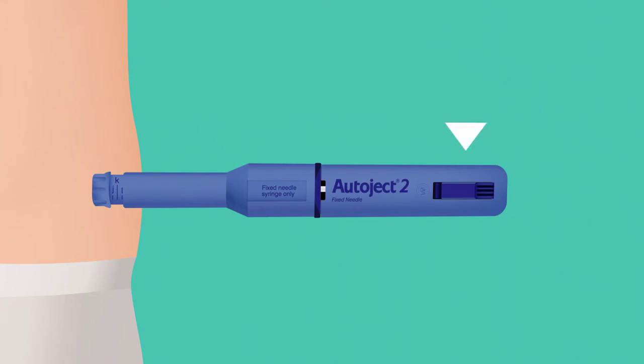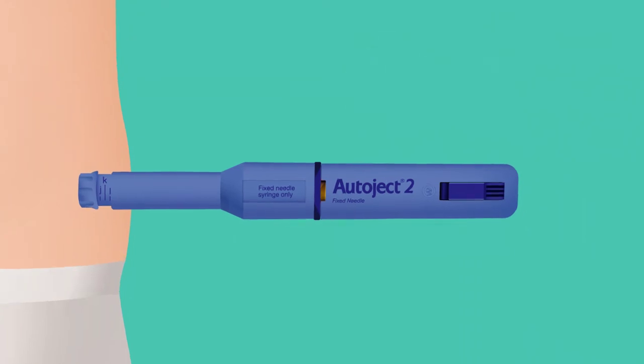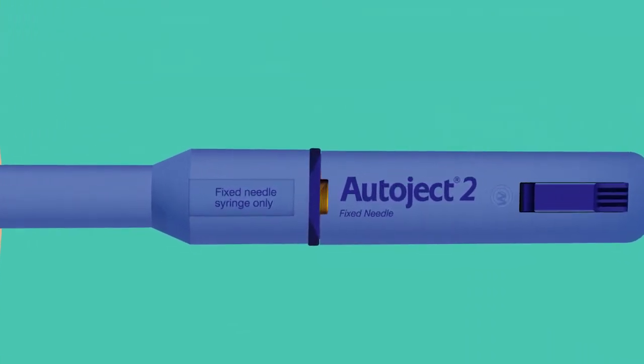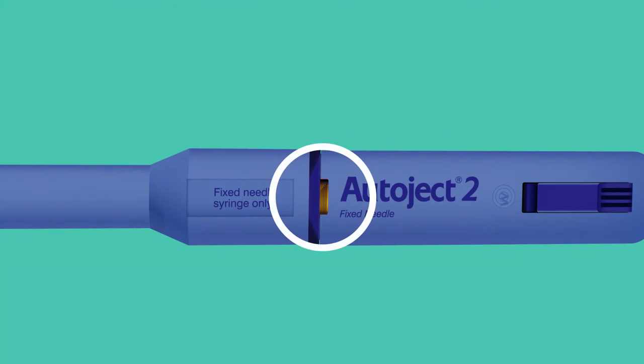Once prepared, press the blue button. Doing so will automatically insert the needle into the skin and the contents of the syringe will be delivered subcutaneously. Hold the device against the skin for five to ten seconds to fully inject the medication. Check the window on the front face of the injector. When the black lines on the yellow indicator come to a stop, the injection has been completed.